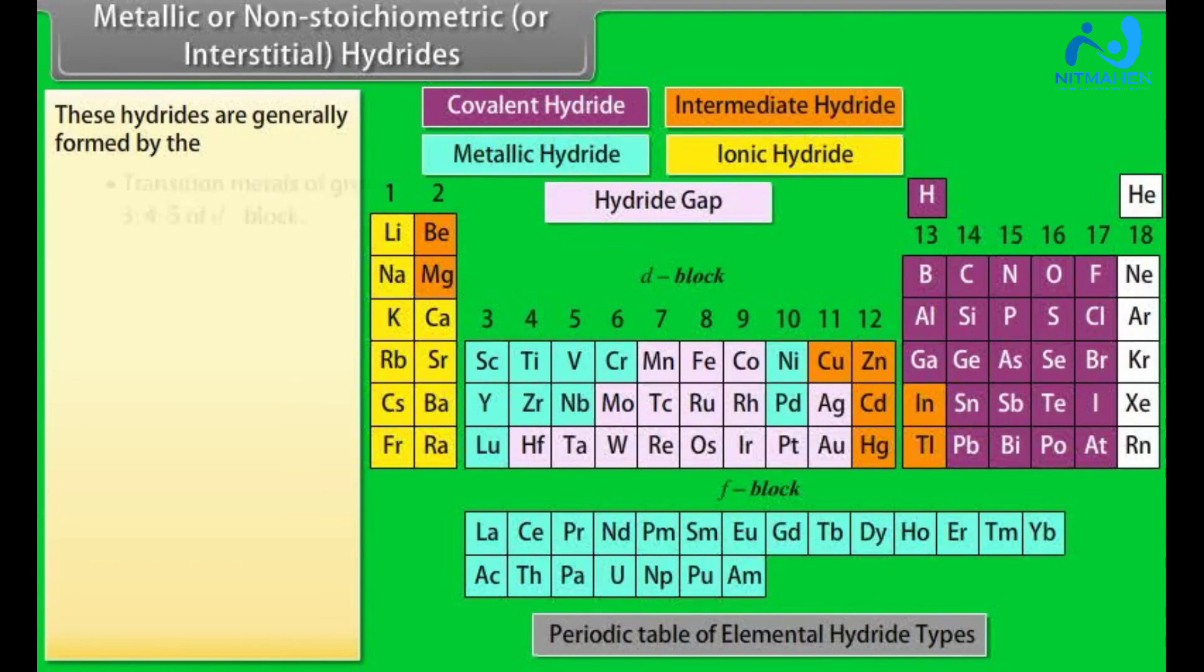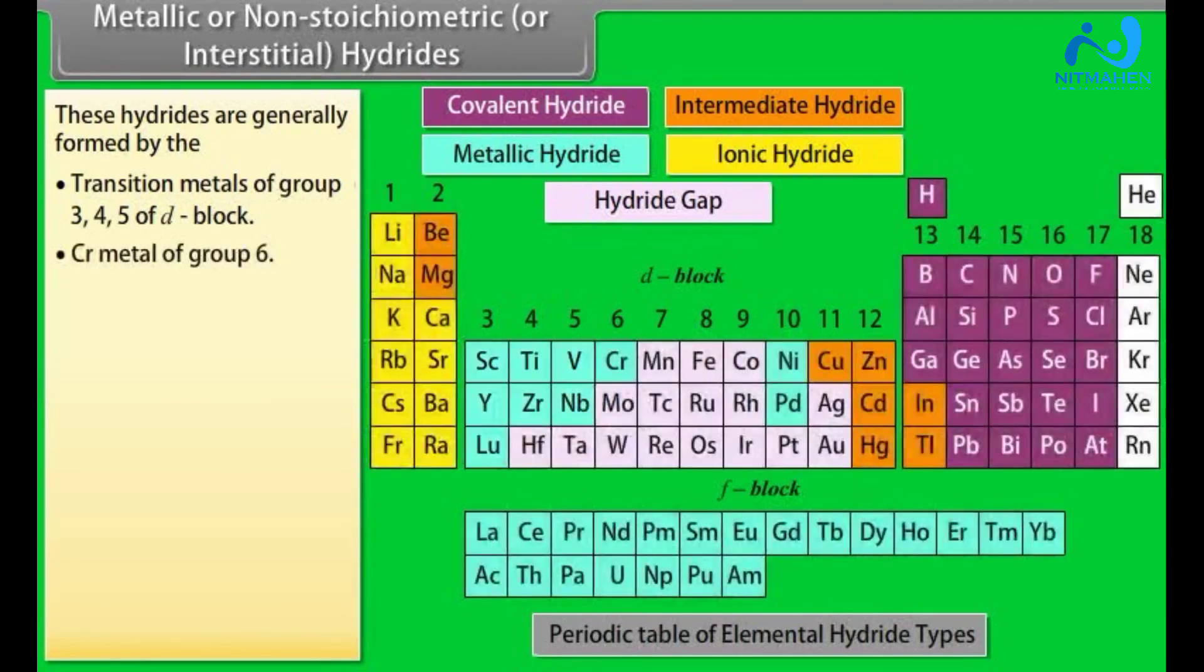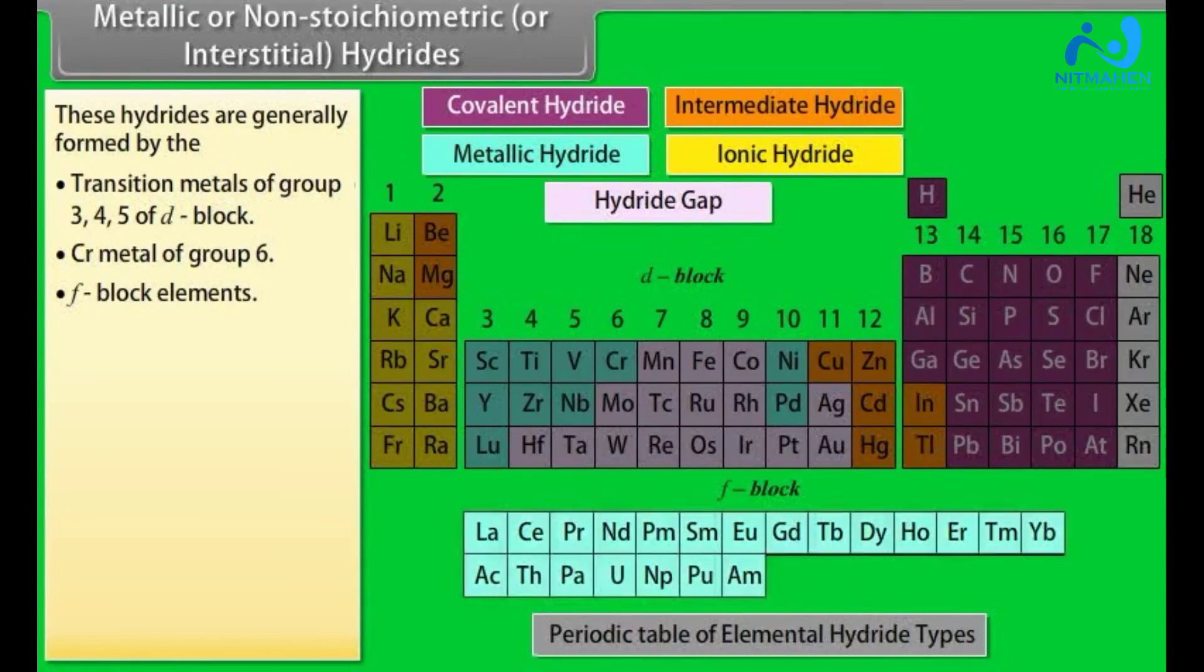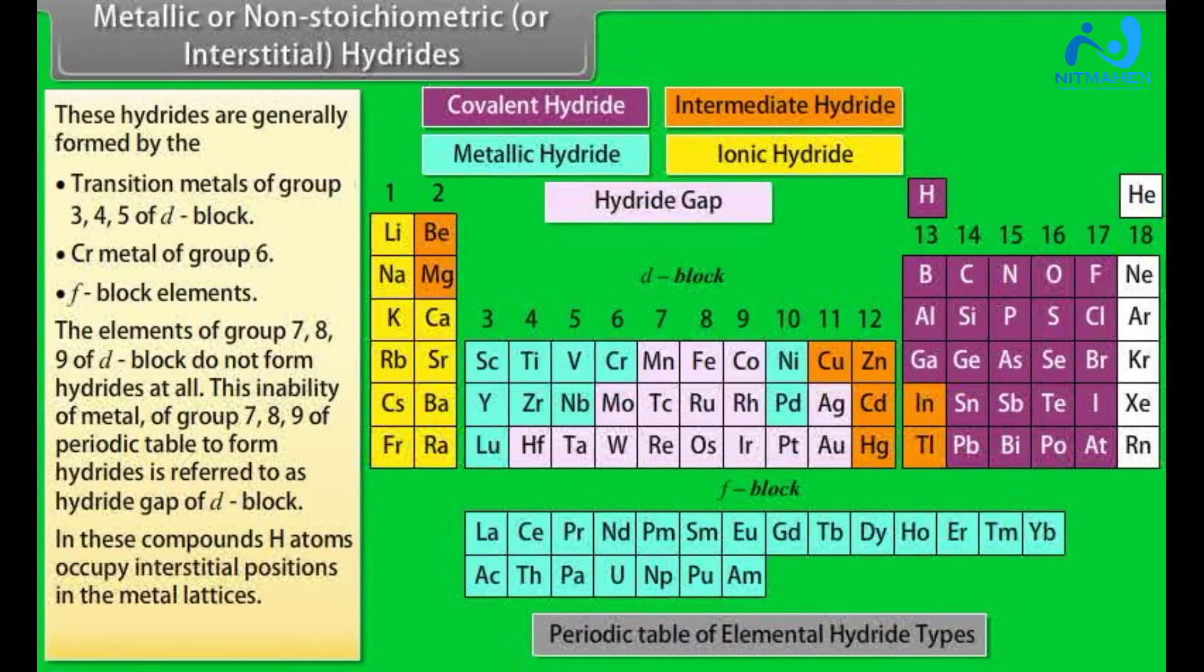Metallic or non-stoichiometric or interstitial hydrides. These hydrides are generally formed by the Transition metal of group 3, 4, 5 of D-block, metals of group 6, and F-block metals. The elements of group 7, 8, 9 of D-block do not form hydrides at all. This inability of metal of group 7, 8, 9 of periodic table to form hydrides is referred to as hydride gap of D-block. In these compounds, H atoms occupy interstitial positions in the metal lattices. For example, ScH2, LaH2.87.